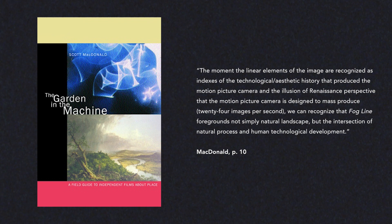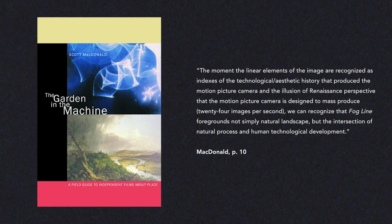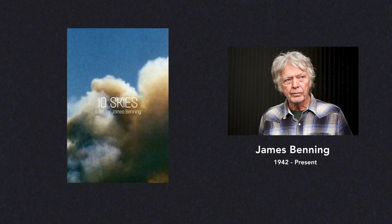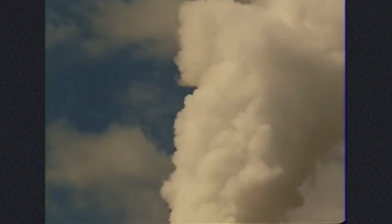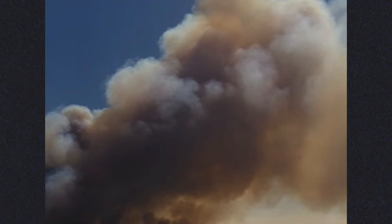We can see a similar allusion to this intersection in the experimental landscape films of James Benning. 10 Skies, for instance, is a film that features 10 long static shots of 10 different patches of sky. Like Fogline, the products of both natural and technological processes are overlaid. In 10 Skies, the various cloud formations are often tainted by human pollutants such as industrial smog, jet engine trails, and accidental wildfire smoke. In effect, these extended shots capture the shift that has occurred